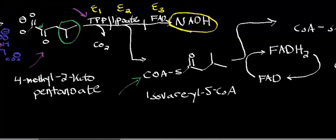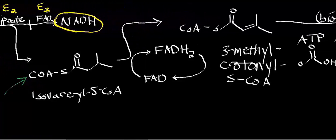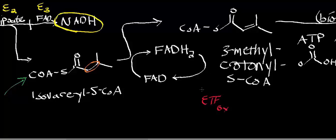We're going to dehydrogenate isovaleryl-S-CoA in an FAD-dependent oxidation, specifically oxidizing this bond up to an alkene. The electrons initially pass into FAD to make FADH2, but those electrons are ultimately going to be transferred to something called an electron-transferring flavoprotein. The FADH2 electrons get transferred to electron-transferring flavoprotein, which is in the mitochondria. It starts in the oxidized form, but when it picks up the electrons from FADH2, FAD is regenerated and the electron-transferring flavoprotein ends up in the reduced form.